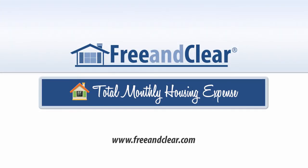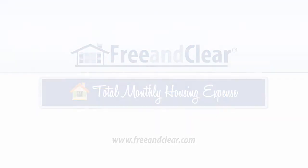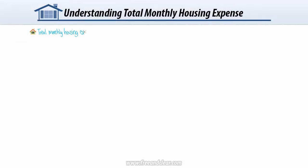When you're thinking about buying a home and getting a mortgage, it's important to consider what your total monthly housing expense will be. Total monthly housing expense includes your mortgage payment in addition to other housing related expenses such as taxes and insurance — basically, the all-in cost of owning a home. I'm going to use an example to walk through the different cost components of total housing expense one by one.